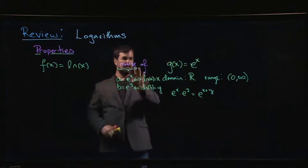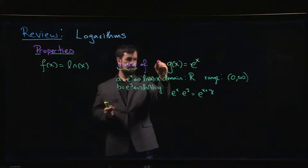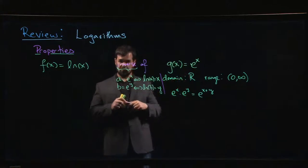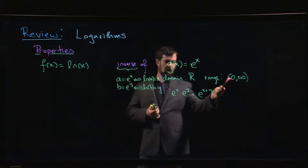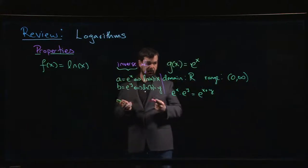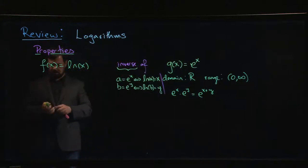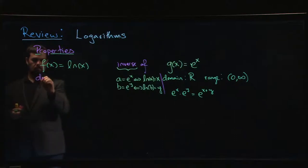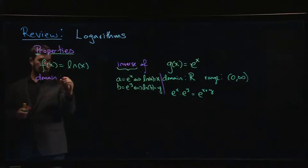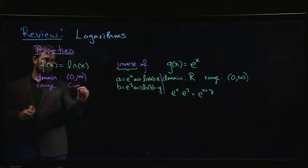The natural log is defined as the inverse of the natural exponential. The natural exponential has a domain of all real numbers and a range from zero to infinity — the graph approaches the x-axis as x gets negative but never reaches it. When you take the inverse, domain and range switch roles, so the domain of the natural log is from zero to infinity. It's not defined for zero or negative numbers, only for positive numbers. The range is all real numbers, from minus infinity to infinity.